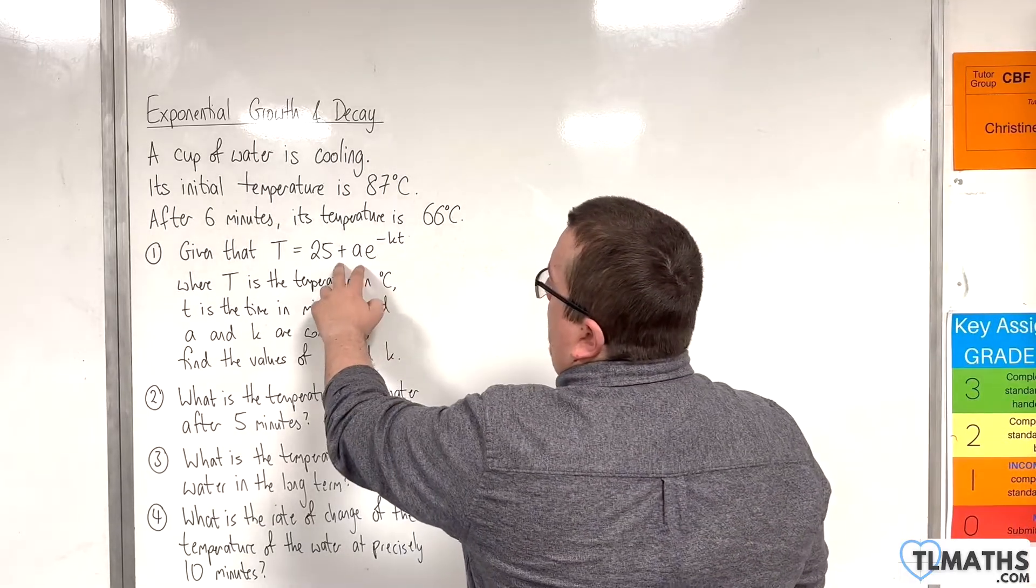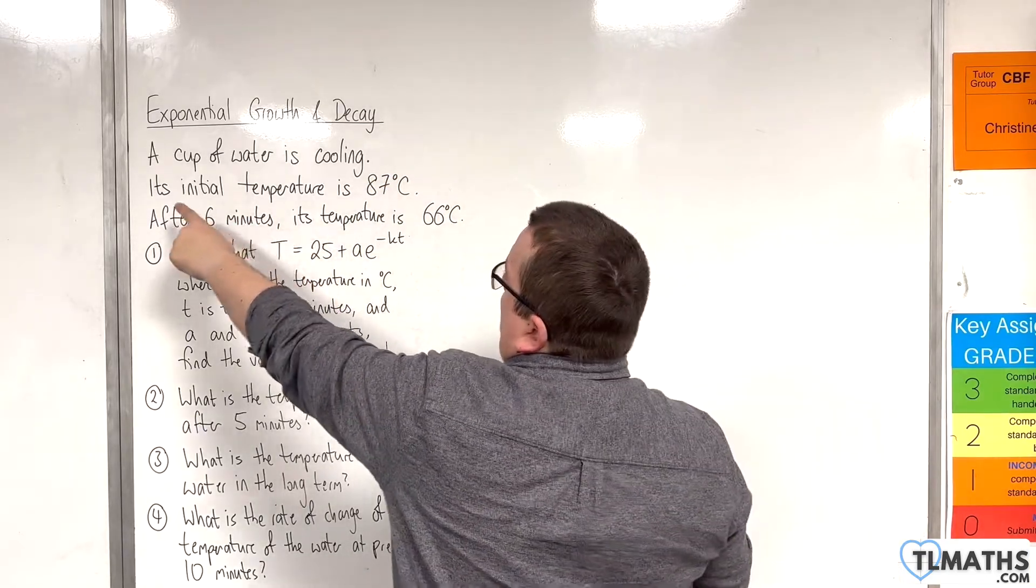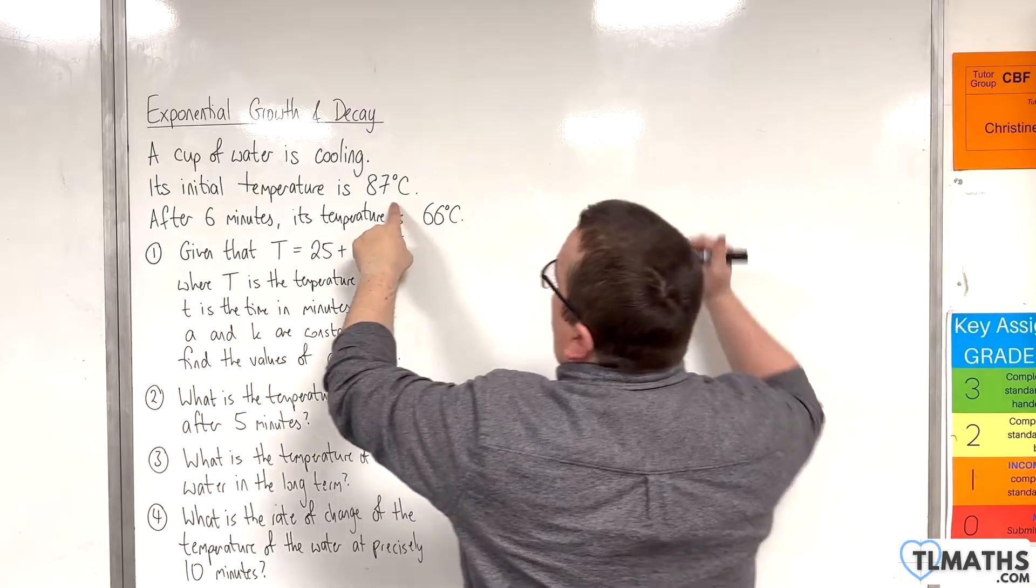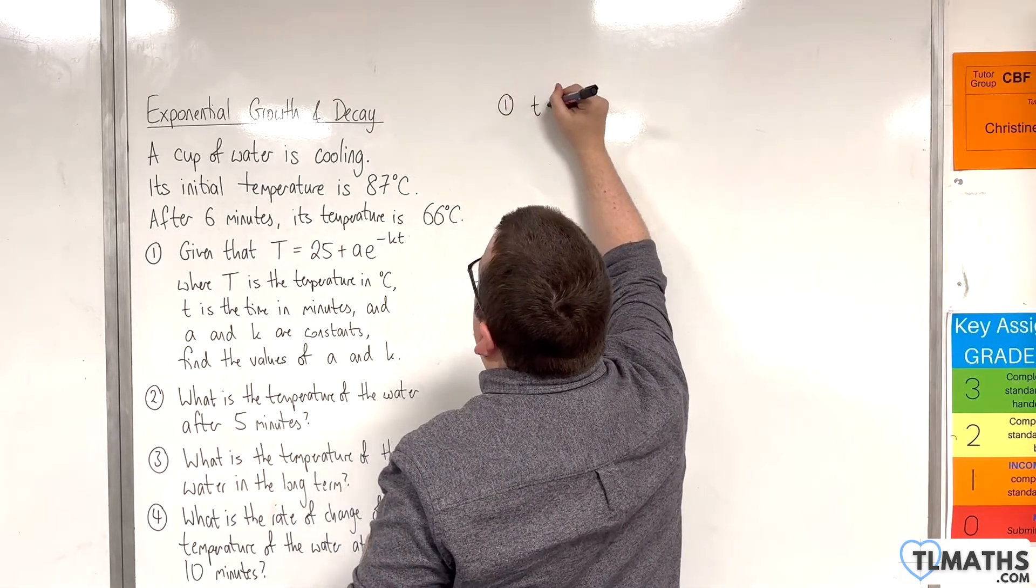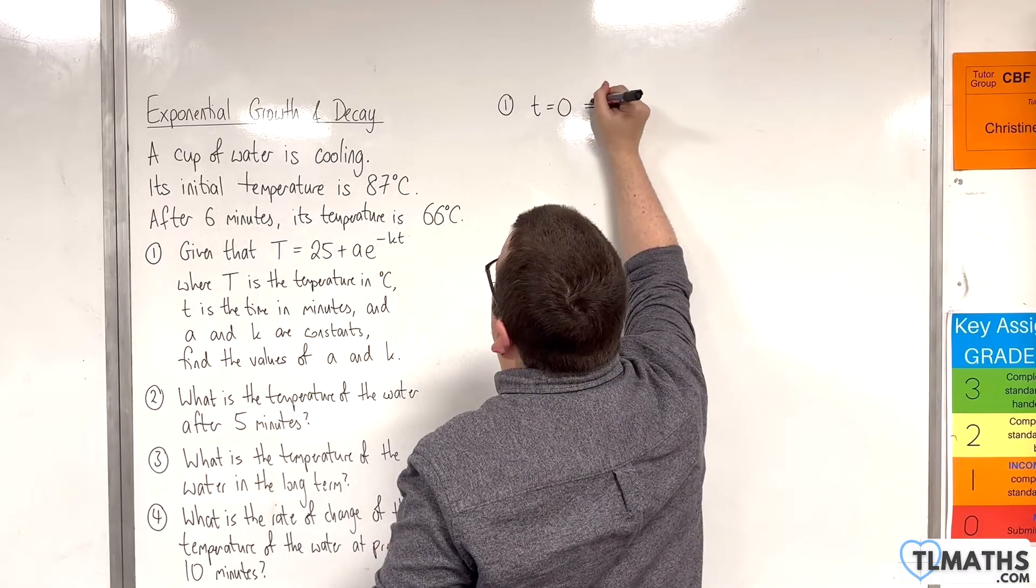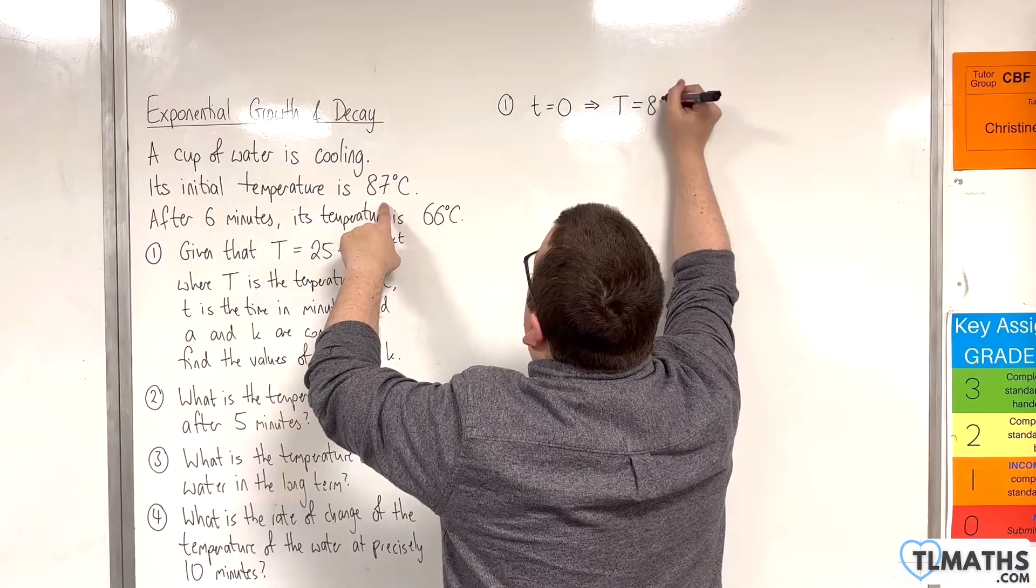So, working with that then, and working with this information, we need to work out A and K. So first of all, its initial temperature is 87 degrees centigrade. So for question 1, we can put T is equal to 0, so initially the temperature, so capital T, is 87.